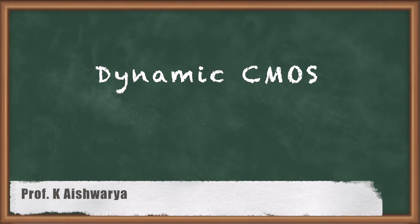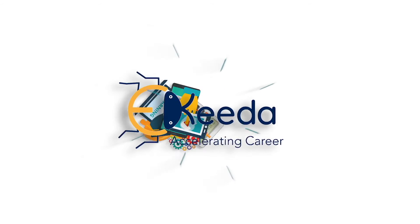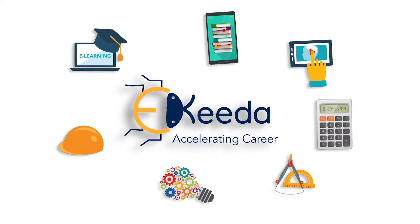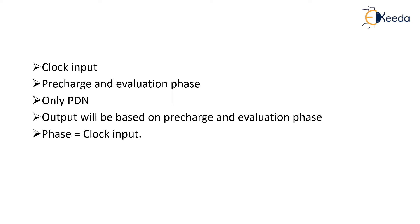Hello students. In this video we are going to learn about dynamic CMOS. In dynamic CMOS, we will be learning about a different circuit style compared with static CMOS. In static CMOS, we had a pull-up network and a pull-down network. Whereas in dynamic CMOS, we will have only a pull-down network — there is no pull-up network.